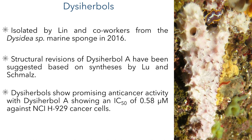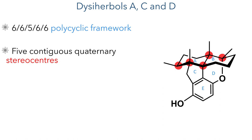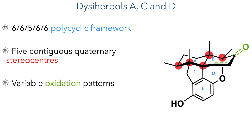These compounds show a lot of interesting biological activity, including anti-cancer activity, with Dissiherbal A showing an IC50 value of just 0.58 micromoles against NCI H929 cancer cells. These compounds have some very interesting structural challenges, such as the 6-6-5-6-6 polycyclic framework that contains five contiguous quaternary stereocenters. In addition, different members of this family have different oxidation patterns, which makes it important to design a synthetic route that can easily be modified to produce different compounds belonging to this interesting family.